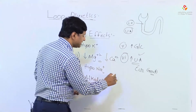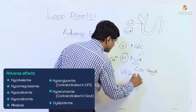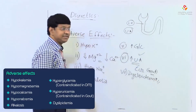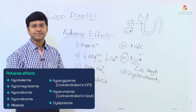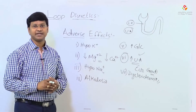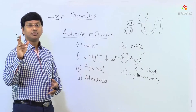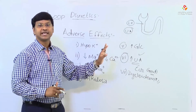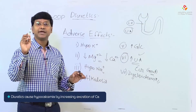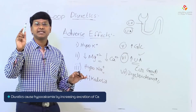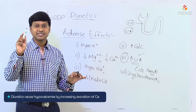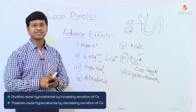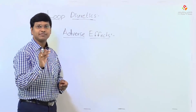Another adverse effect is dyslipidemia. To summarize regarding calcium: loop diuretics cause calcium loss and therefore cause hypocalcemia by increasing excretion of calcium, whereas thiazide diuretics cause hypercalcemia by decreasing its excretion.